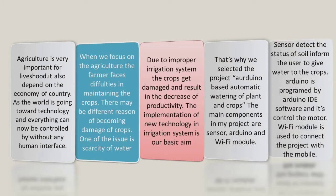First of all we have the introduction. You don't need to write everything in paragraph form — just write in bullet points and explain orally. Agriculture is very important for livelihood and it also depends on the economy of the country. As the world moves toward technology, everything can now be controlled without human interface. When we focus on agriculture, farmers face difficulties in maintaining crops. One issue is the scarcity of water due to improper irrigation systems, causing crop damage and decreased productivity. The implementation of new technology in irrigation is our basic aim.